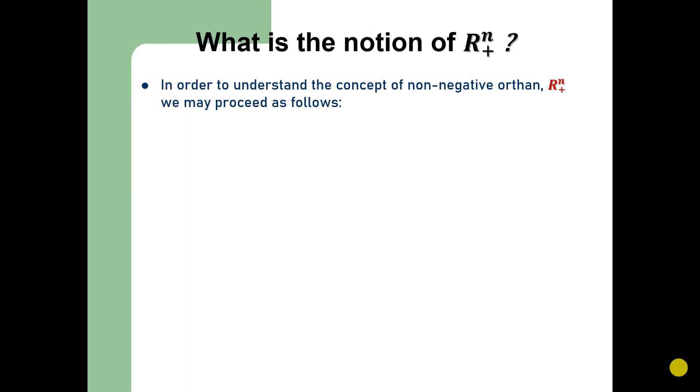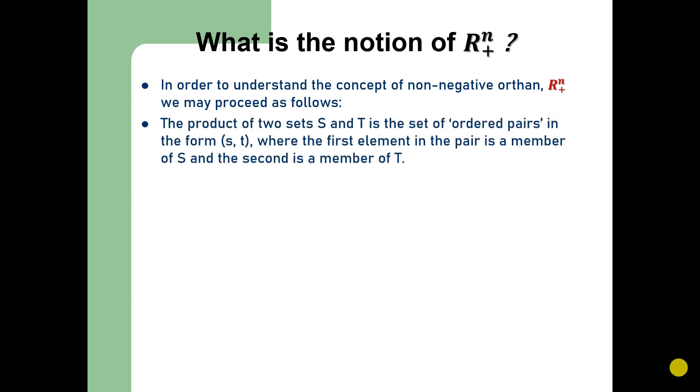In order to understand the concept of non-negative orthant given by R^n_+, we may proceed as follows. Let us suppose there are two sets, set S and set T. The product of the two sets S and T is the set of ordered pairs in the form (s, t) where the first element belongs to set S and the second member t belongs to set T.